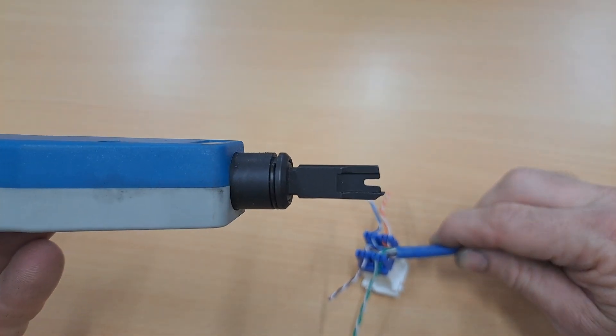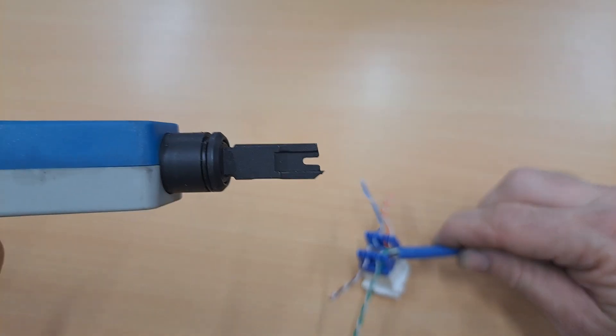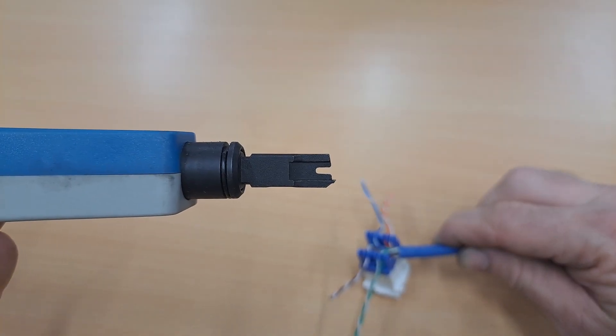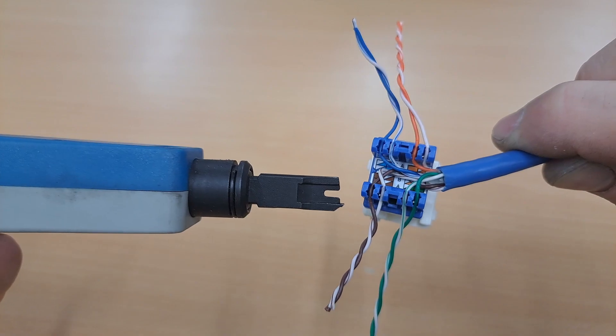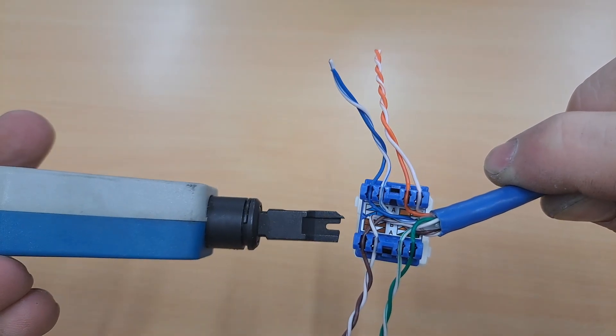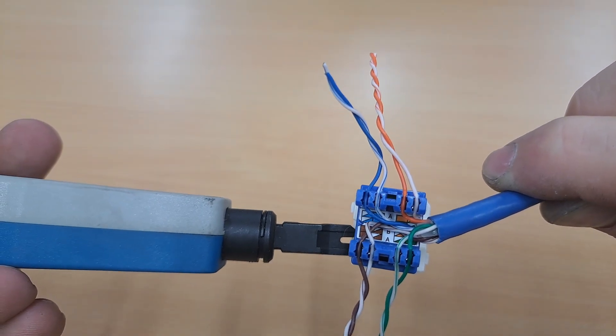You will notice that it has got a sharp edge on one side. We want to make sure that this is cutting the off cut and not the cable. So we want to have it orientated like this and not like this. If you do this, it will cut the cable.